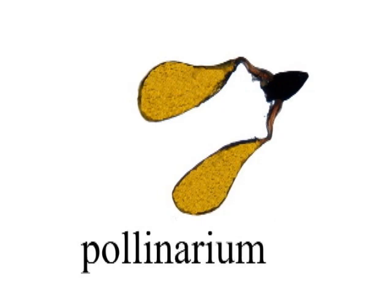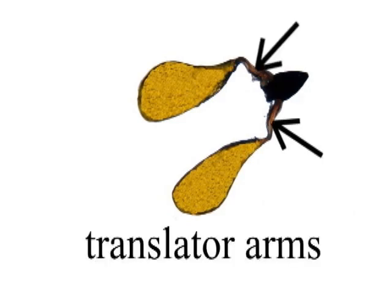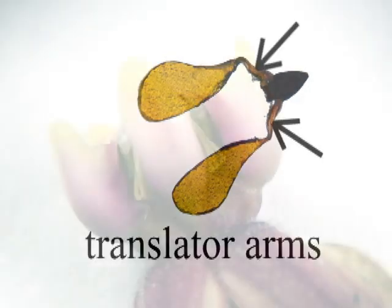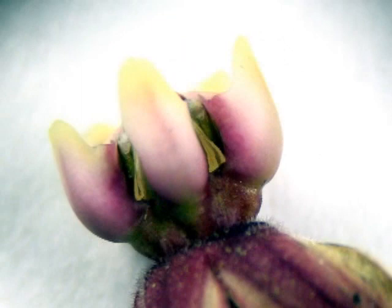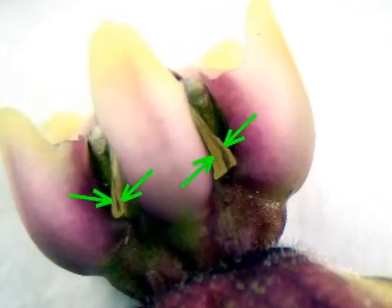The black structure at the top of the pollinarium is the gland. It is connected to the pollinia with filaments called translator arms. This image of a milkweed flower, captured through a microscope, shows the pollinia. They are attached to the flower head.